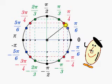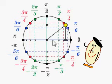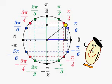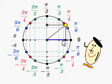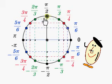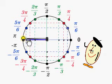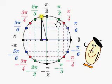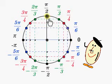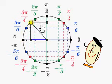This point has two coordinates: an x-coordinate and a y-coordinate. The x-coordinate — you see the blue one here — is called the cosine of the angle. Observe that the cosine belongs to the segment from negative 1 to plus 1.